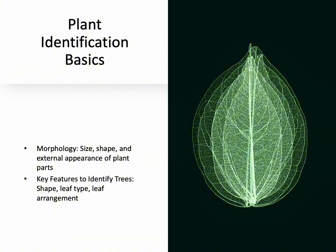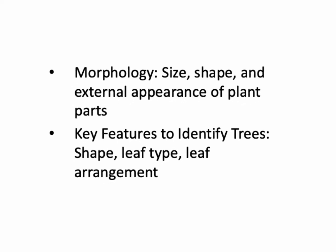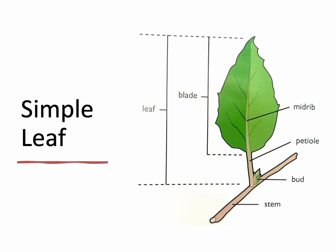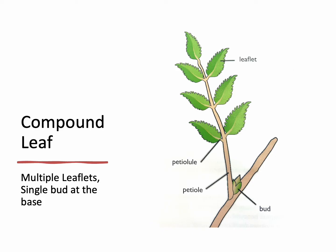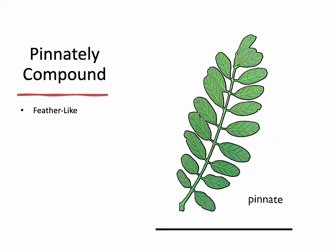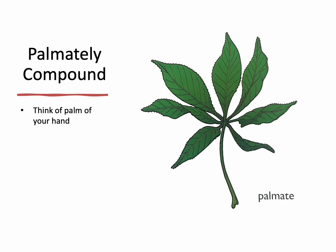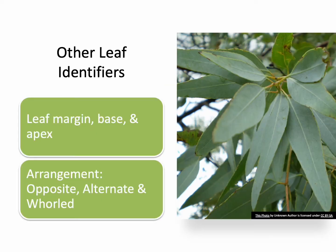When it comes to identifying trees, we rely on morphology — the shape and appearance of a plant's parts. You can often ID a tree just by its overall shape from a distance. Getting into leaves: simple leaves are single with no leaflets. Compound leaves have multiple leaflets but only one bud at the base. Pinnately compound leaves attach along the central vein like feathers. Bipinnately compound leaves have a second order with even smaller leaflets. Palmately compound leaves all meet at one point, like fingers on a hand. We also use leaf margins, bases, and apexes to help ID leaves.